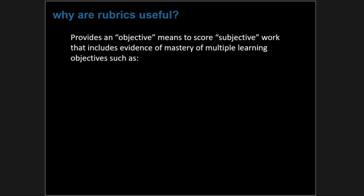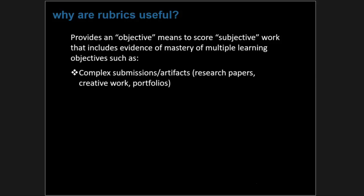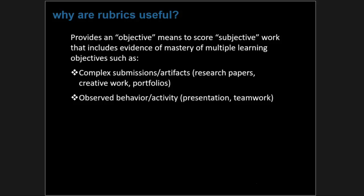Let's look at why rubrics are so useful. Most importantly, they provide an objective means to score subjective work — work that might include evidence of mastery of multiple learning objectives in a single submission, such as a complex writing assignment, a research paper, some piece of creative work, or a portfolio. You can also rubric-score observed behavior like presentations or teamwork to evaluate communication and collaboration skills.